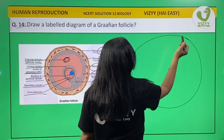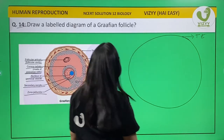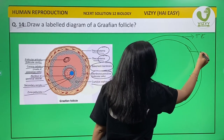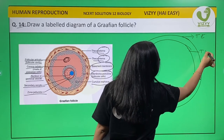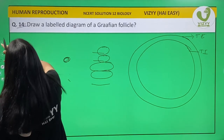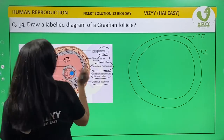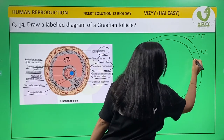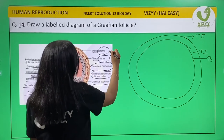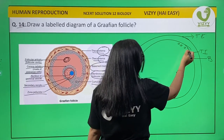Now let's start drawing. This outer layer is our theca externa. Now we make the theca interna inside it. Label this portion as the basement membrane.